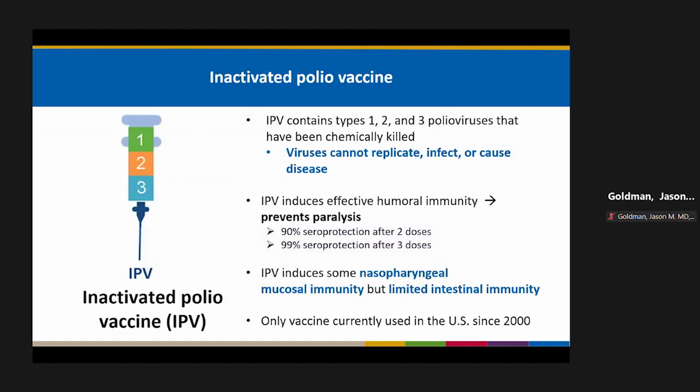Inactivated polio vaccine, or IPV, contains three serotypes of polio virus that have been chemically killed, so the viruses can't replicate, infect, or cause disease. IPV induces very effective humoral immunity, preventing paralysis. About ninety percent of subjects receive seroprotection after two doses, and ninety-nine percent after three doses. IPV induces some nasopharyngeal mucosal immunity but limited intestinal immunity, meaning vaccinated individuals may still shed polio virus in stool if infected. Since 2000, only IPV has been recommended for use in the United States.